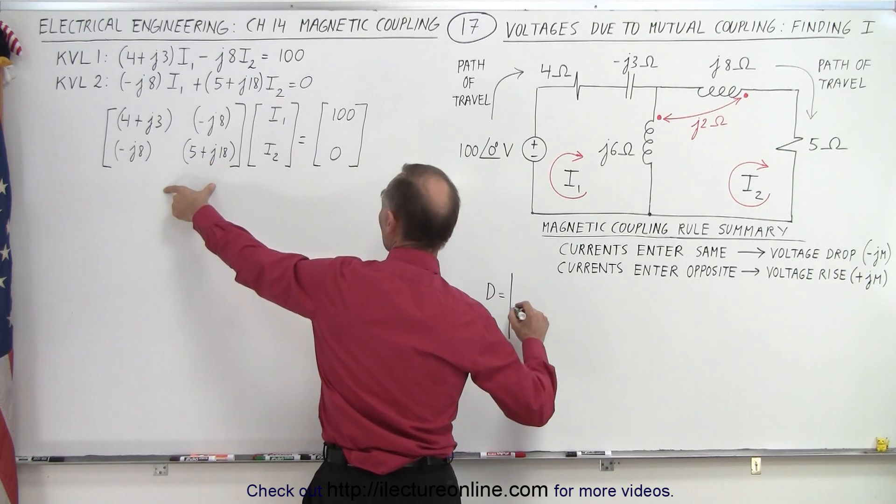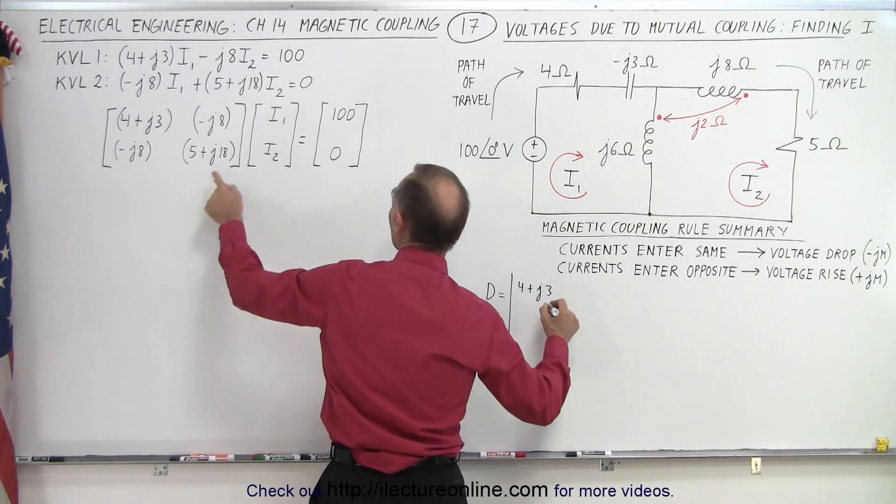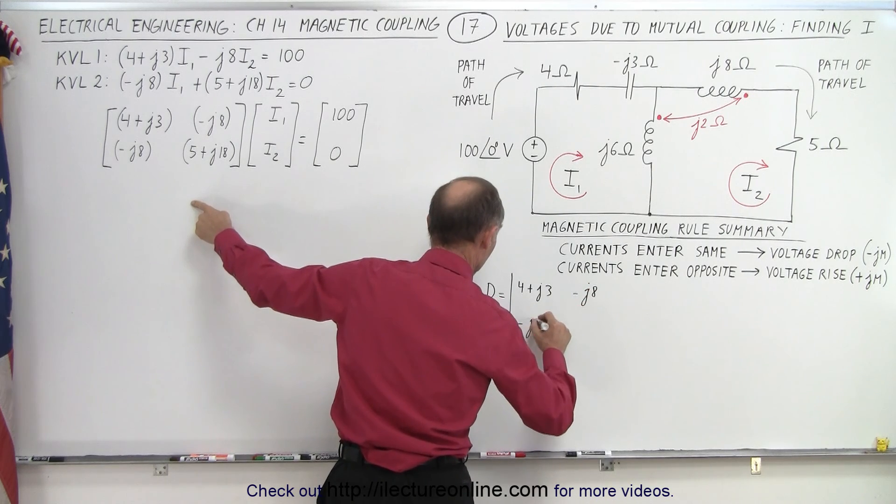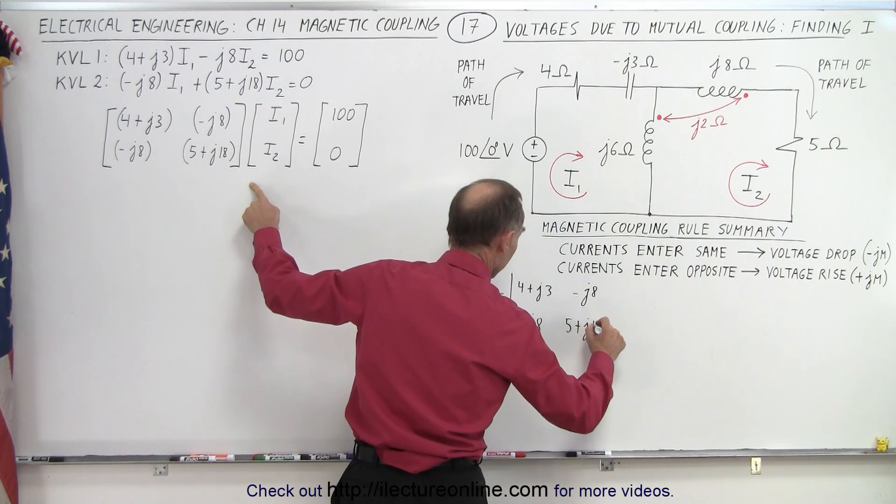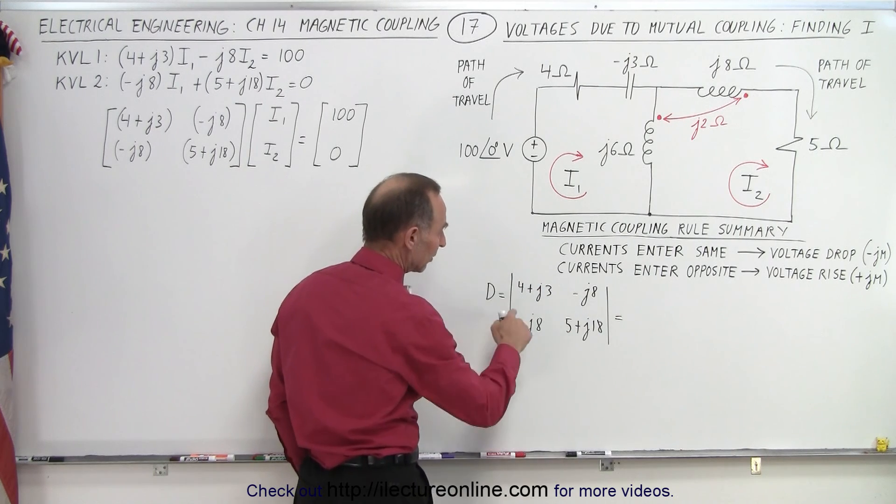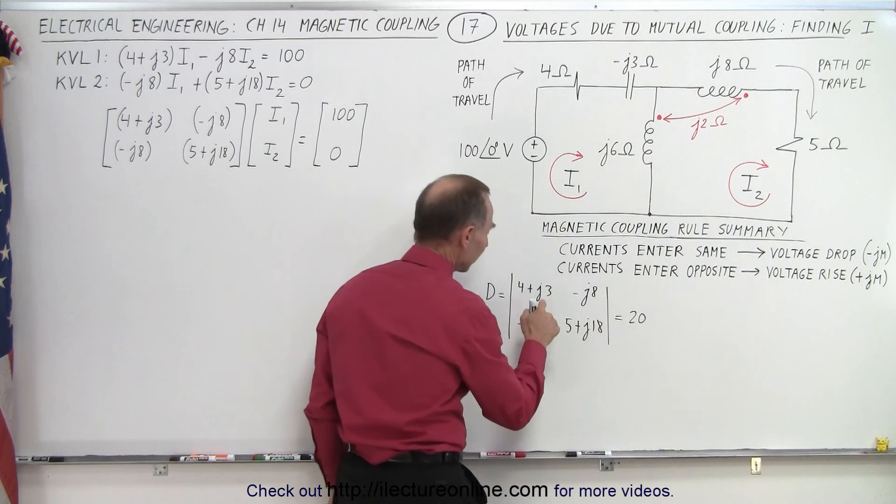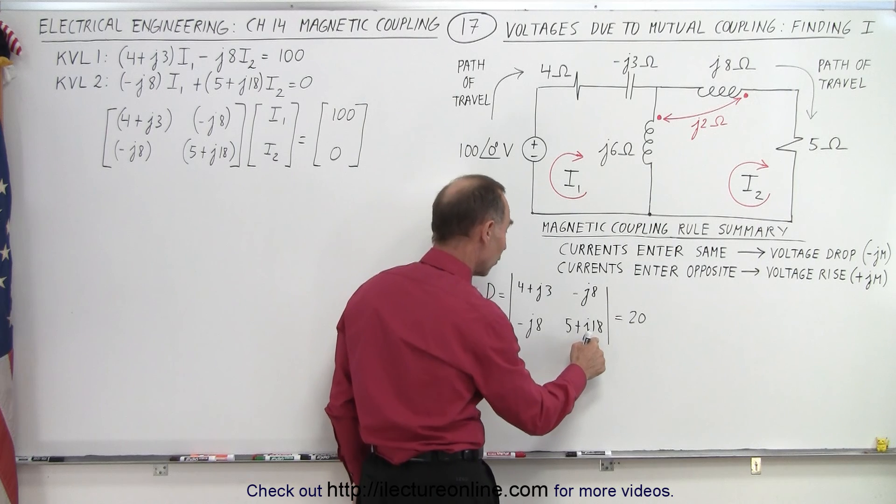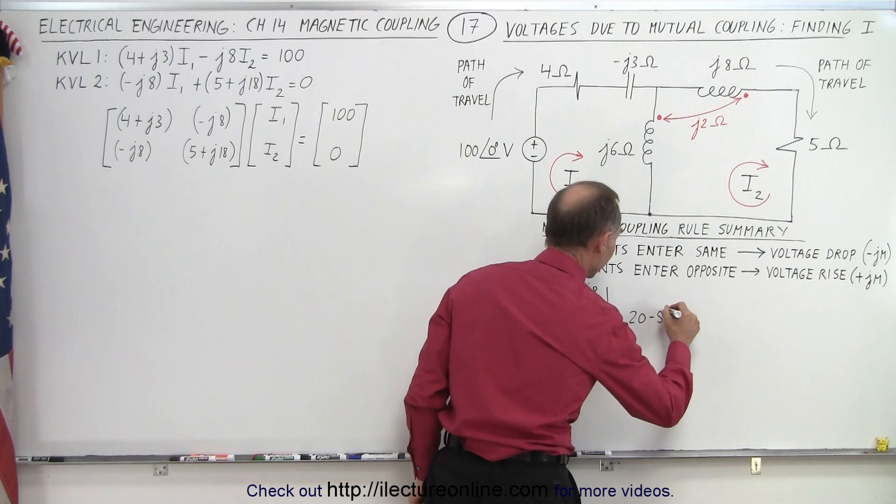D is equal to, we'll go ahead and copy this. So we have 4 plus J3, we have minus J8, we have minus J8 and 5 plus J18. Like this. Alright, and that is found by first multiplying these two together. So we have 4 times 5, which is 20. We have J3 times J18, 18 times 3 is 54, but we have J times J which is negative 1, so that would be minus 54.